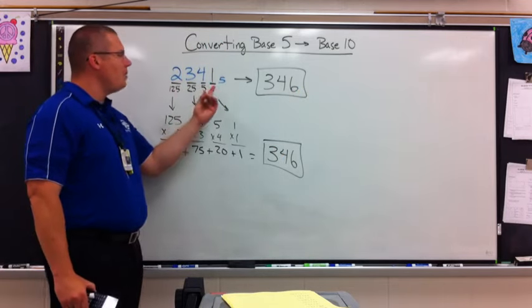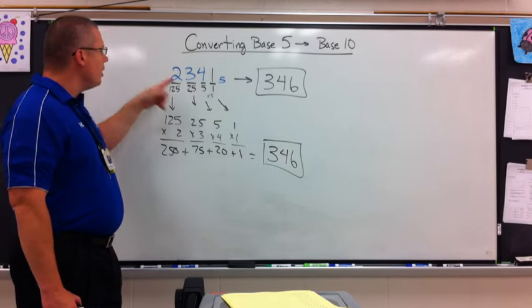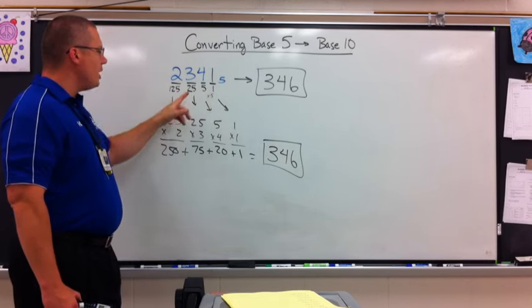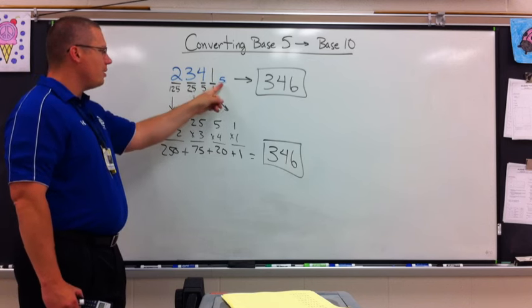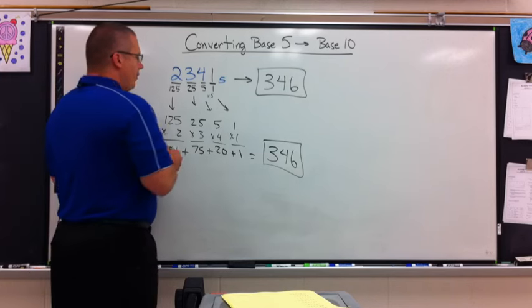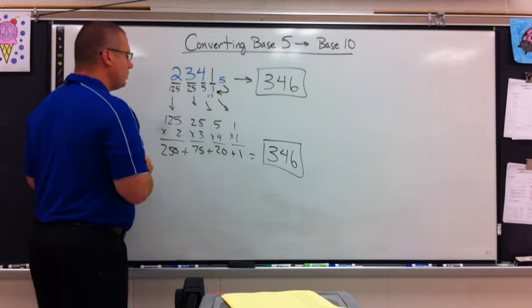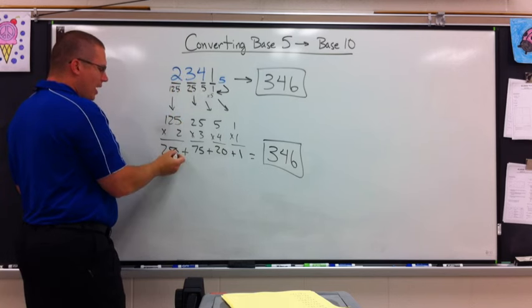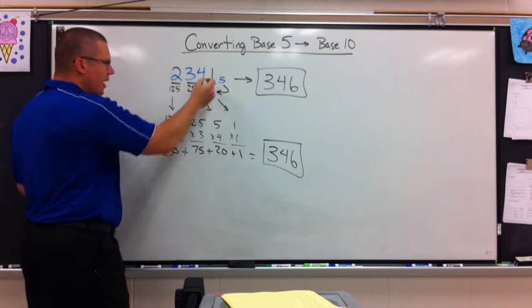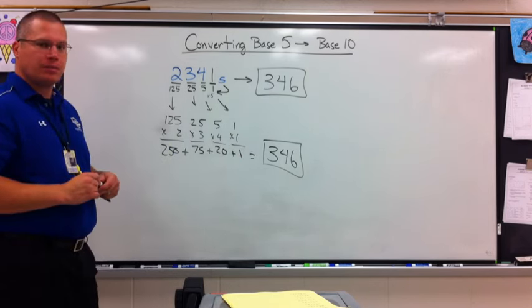How much is 2, 3, 4, 1, base 5 into base 10? 346. How do I do it? Fill in my place values underneath. Again, it's base 5 place values, because there's a 5 here. So I must make sure that the place values match up what the base is. Once I have that, I take the digit on top times the place value. Digit times place value. Add them all up, and I get 346. That's it.